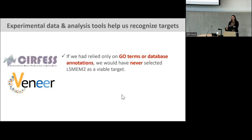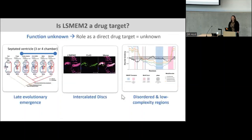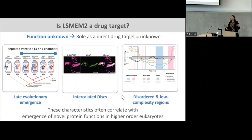In the end, if after doing all of our studies we had relied only on gene ontology or database annotations, we would have never selected LSMEM2 as a viable target. It's really the stringent criteria for classification as a surface protein that helped us not overlook this protein of interest. LSMEM2 — what do we know about it? We have no idea if it's a drug target yet because its function is unknown. One cool thing is that this is a protein you cannot study in your zebrafish model because it's only present in animals that emerged very late in evolution — you have to have either a septated three-chamber heart or a four-chambered heart in order to express this protein. It's present in the intercalated disc and is predicted to have a number of disordered and low-complexity regions, which can often correlate with the emergence of novel protein function in higher-order eukaryotes.